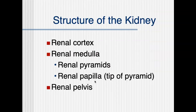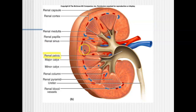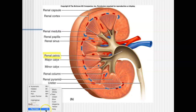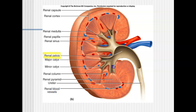The other structures to identify are the renal pyramids and the renal papillae. The renal pyramids are these little triangular structures in the medulla, and the tip of each one is the renal papilla. Each pyramid is a little filtration device that manufactures urine — urine from all these pyramids accumulates and then drains into the ureter.